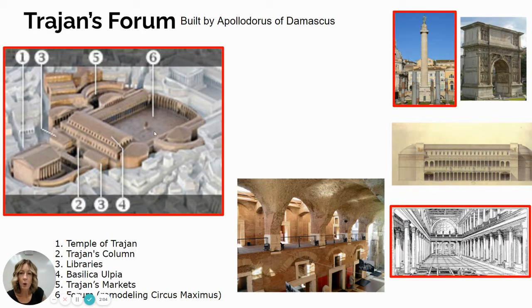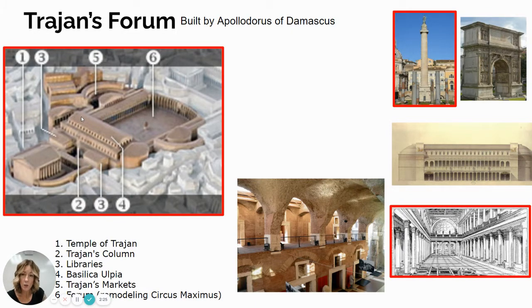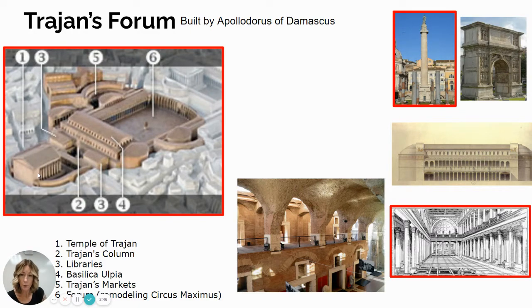This big open area is the forum — an open area for gathering and events, surrounded by a colonnade. At one end of the forum, you have a long building: the Basilica Ulpia. Over here, where you have a lot of half circles and curves, this is Trajan's market area. Back here is the Temple of Trajan, and right here behind the basilica is Trajan's column.